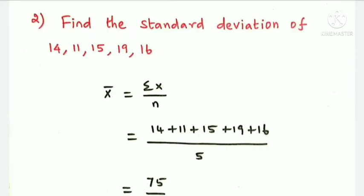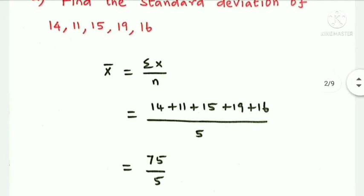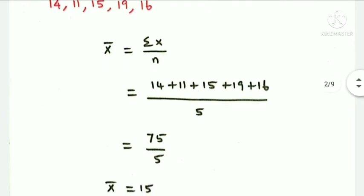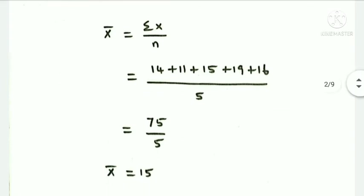Next question: find the standard deviation of 14, 11, 15, 19, and 16 using the mean deviation method. The mean x-bar equals summation x by n, which is 75 by 5, giving an answer of 15.